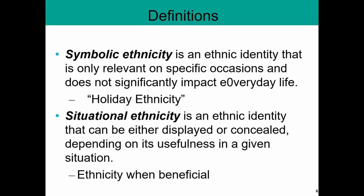Traditional ethnicity is an ethnic identity that can be either displayed or concealed depending on its usefulness in a given situation — ethnicity when beneficial. It is similar to the concept of cultural capital we talked about with socioeconomic class. It is using your knowledge of your ethnicity to bond with another person. For example, if as part of your ethnic identity you were fluent in Spanish, and you were interacting with another person who is also fluent in Spanish, you can communicate with them in a more intimate way in our predominantly English-speaking society — a kind of 'I am someone you can trust' kind of thing.